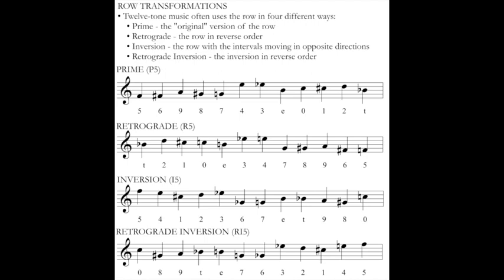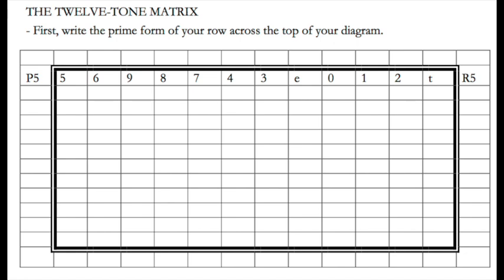The last thing we'll talk about today is the 12-tone matrix. This is a useful tool for interacting with 12-tone serial music, whether you're writing it or analyzing it. The matrix is a 12-by-12 diagram that displays all the different forms of a potential 12-tone row. We start by writing our prime form across the top: 5, 6, 9, 8, 7, 4, 3, 11, 0, 1, 2, 10. By writing this row, I've written two forms already — the prime form P5, reading left to right, and the retrograde R5, reading right to left.